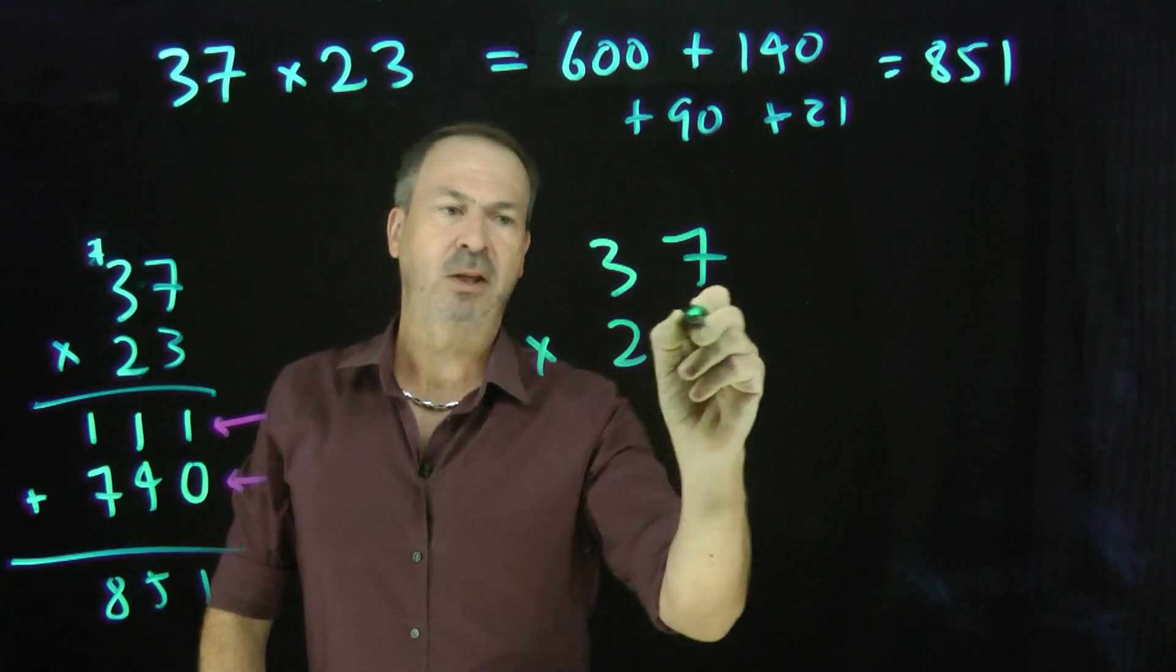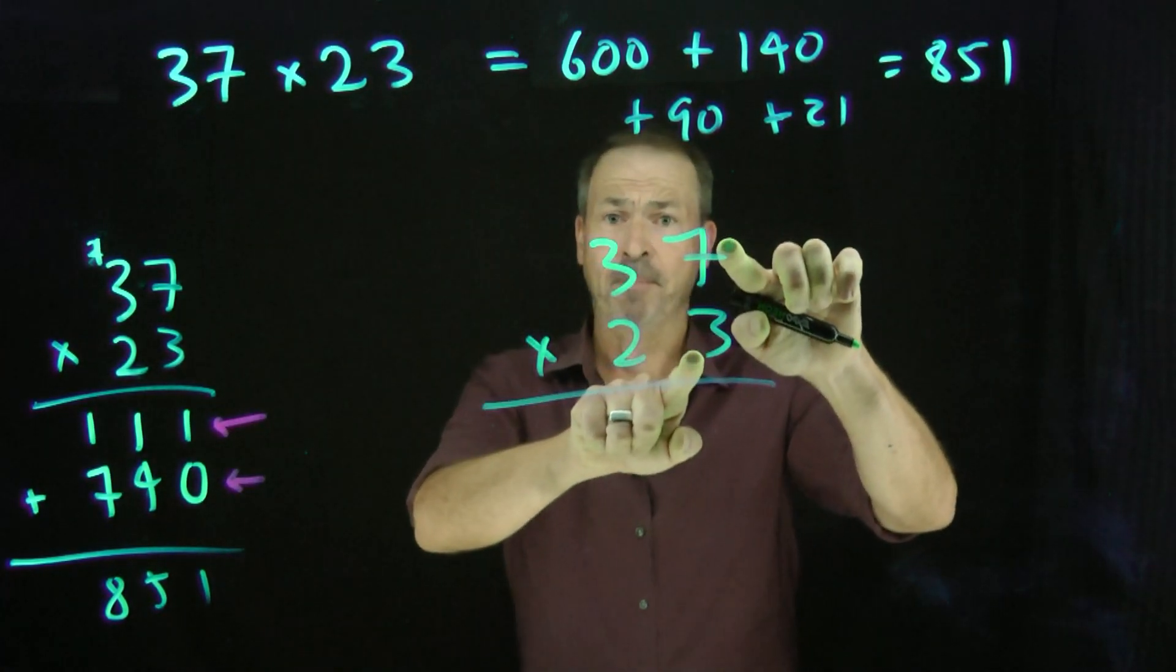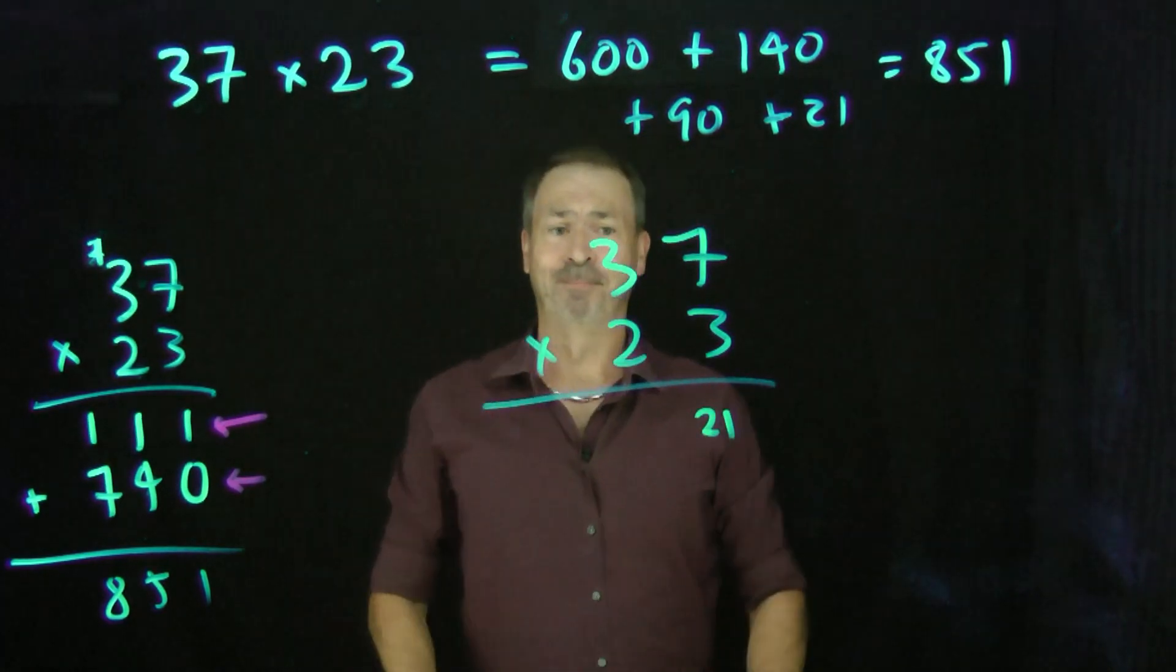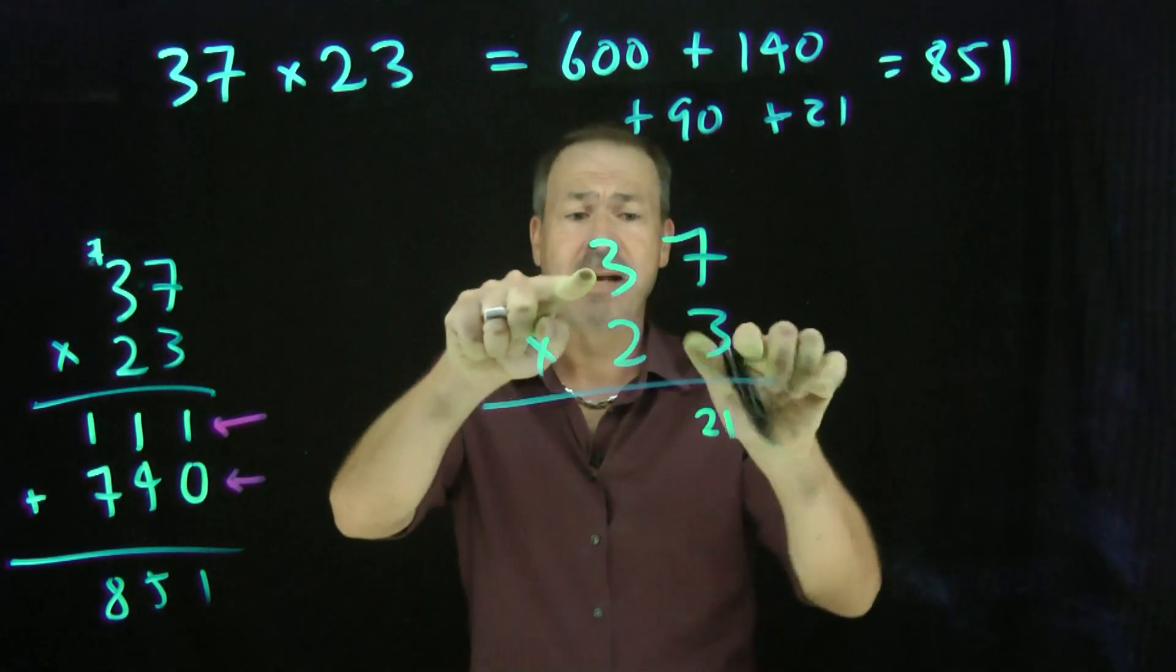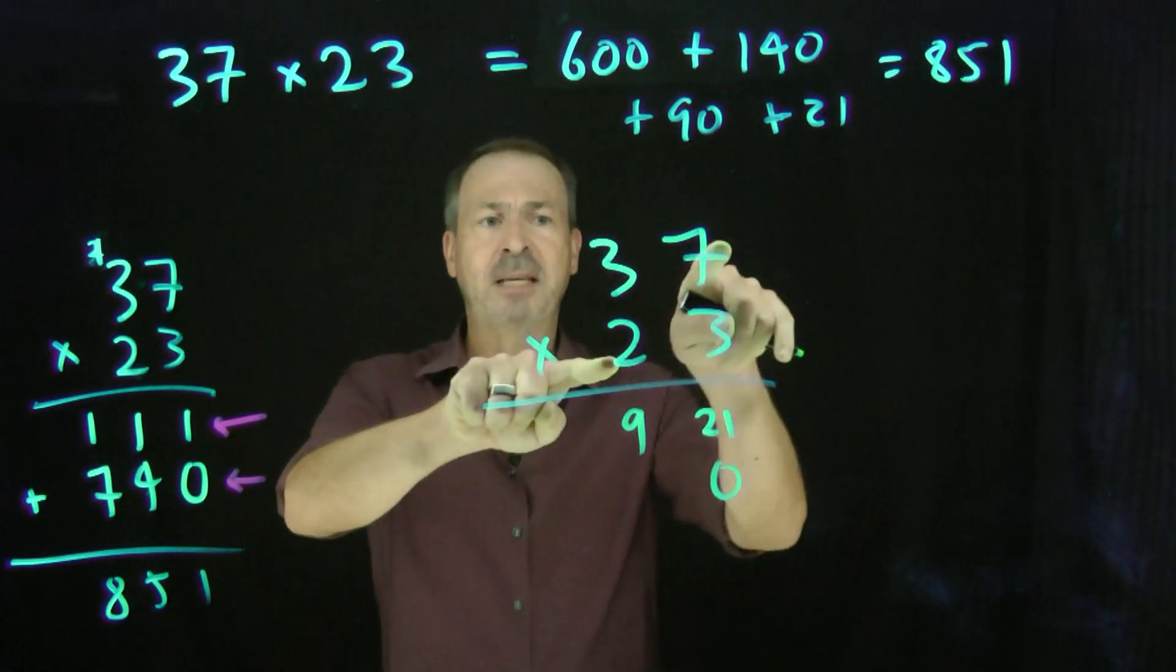37 times 23. Alright. Do the same thing. 3 times 7 is 21. Okay. I meant to just write the 1 and carry a 2. Don't. Actually write 21. Alright. 3 times 3 is 9. That's fine. Just write 9. Okay. Do the 0 thing. 2 times 7 is 14. I meant to write a 4 and carry a 1. Don't.